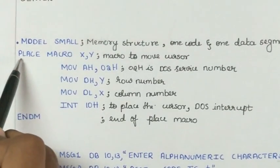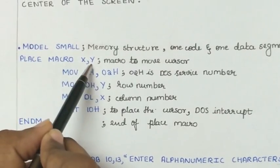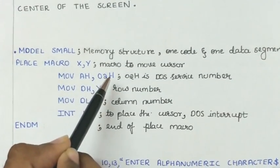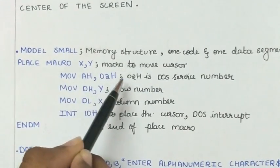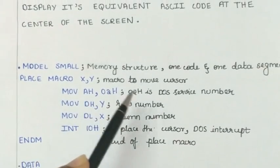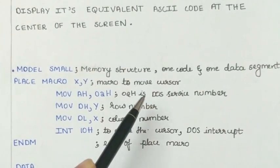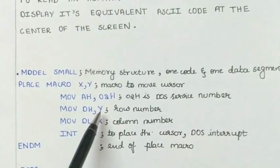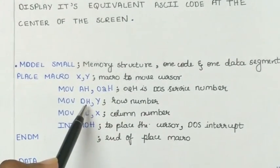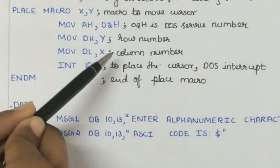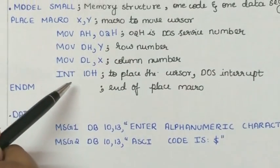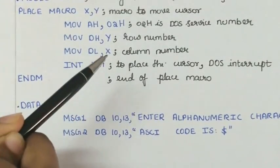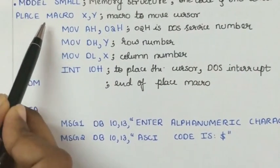Name of this macro is place and here x and y are the parameters passed to this macro. Move ah,02h. In this particular command, you are moving 02h to the ah register which is a DOS service number. It's used when there is some screen activity. Move dh,y. You are moving a row number into the dh register. In the next command, we are moving the column number into dl. We then write interrupt 10h. This is to place the cursor into that particular position. End m indicates the end of the macro.